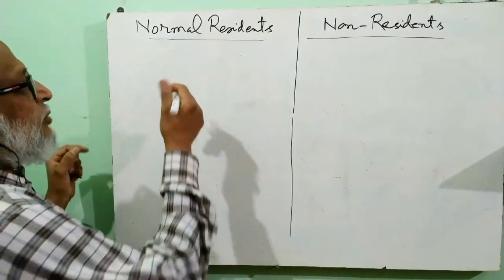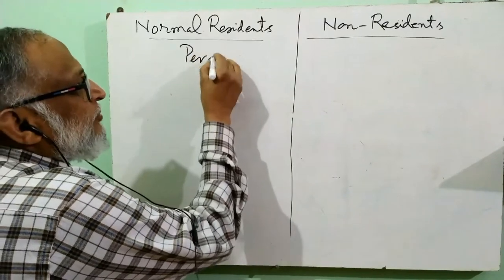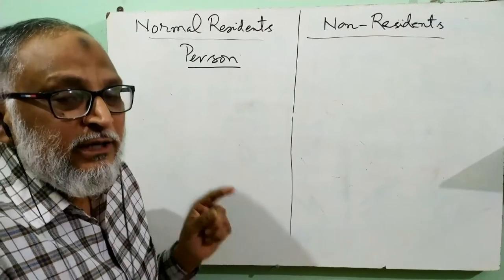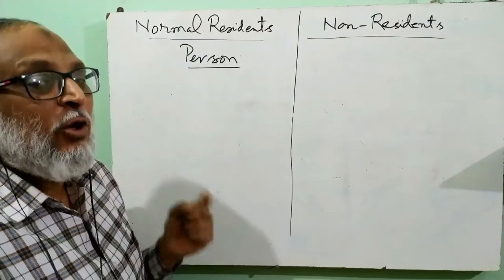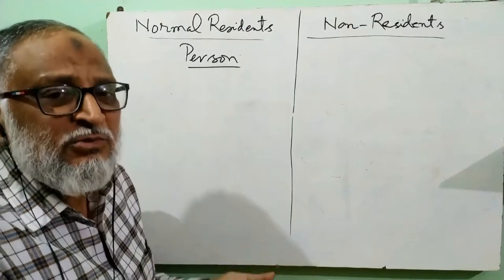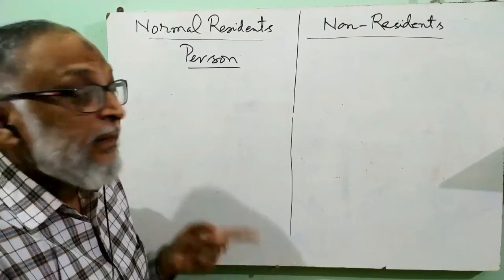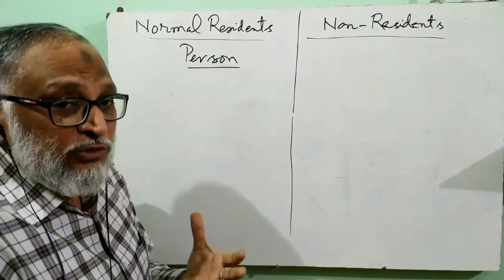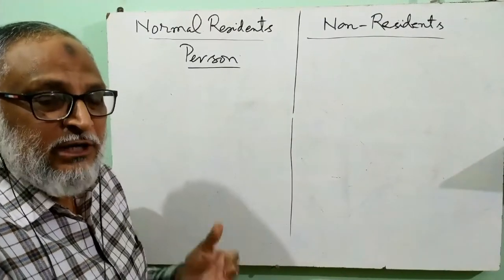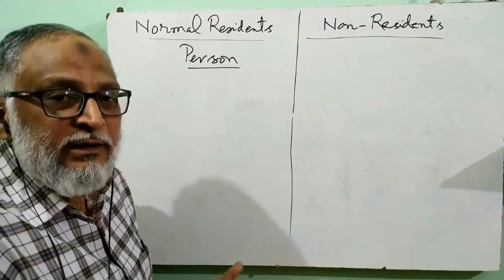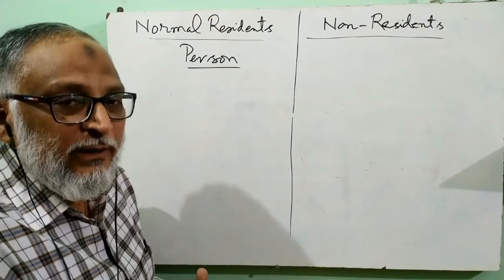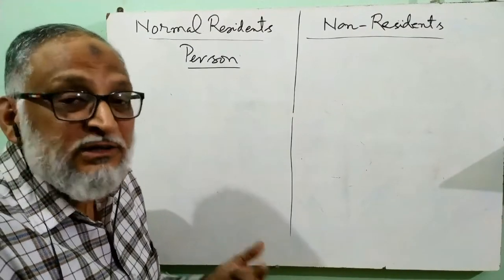First of all, we will discuss about a person whom we will call a normal resident. As I mentioned earlier, it is not necessary that a person who is a normal resident of a country is also a citizen of that country — it happens in most cases but it doesn't matter. Now, suppose we are born in this country, brought up in this country, studied here, and are doing a job here. Similarly, others doing business here, professionals, self-employed — they are normal residents of this country.